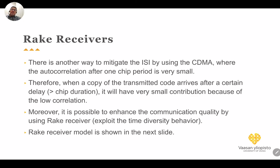Another way to mitigate the multipath problem is using CDMA. Recall from part 1 that code division multiple access assigns orthogonal or near-orthogonal codes to each user, allowing the receiver to separate users. The same concept can be used to separate different paths.